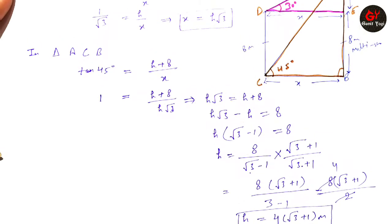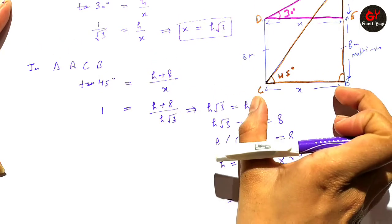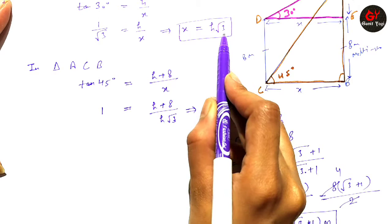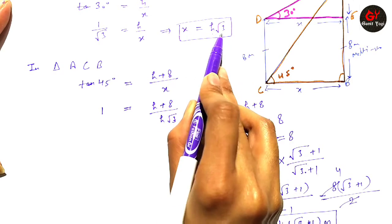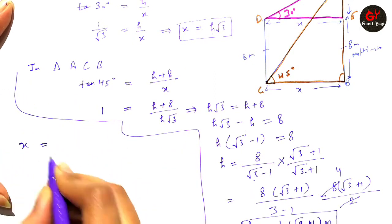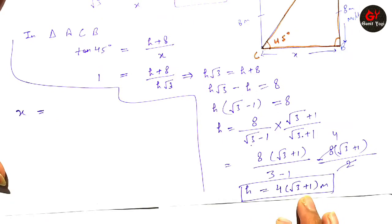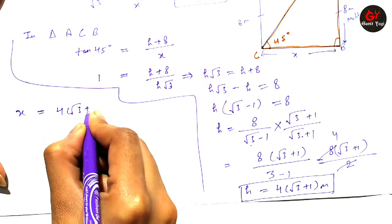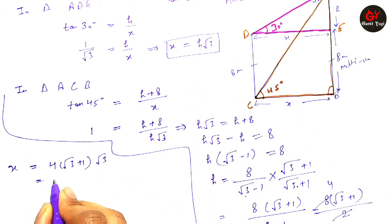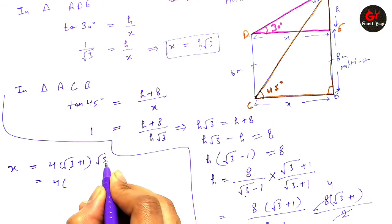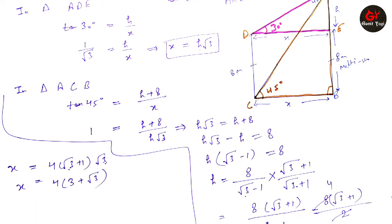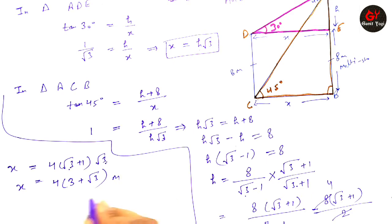Now we need to find the distance x between the two buildings. We already have x = h√3. Substituting h = 4(√3 + 1), we get x = 4(√3 + 1) × √3 = 4(3 + √3). So the distance between the two buildings is 4(3 + √3) meters.